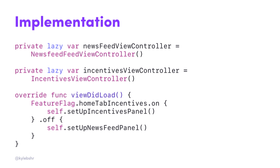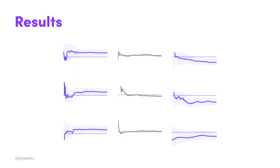Once we shipped this, the results came in and they were pretty actionable. The metrics we hoped to move up were up. Some were flat, and that was great because they were metrics we didn't want to affect in the first place. And some were down, but they were metrics we expected to be down based on our changes — they made sense given the context. Things like news feed views were down significantly, of course.